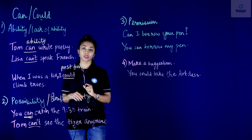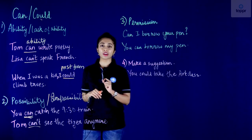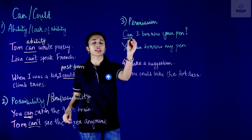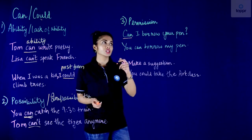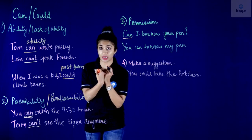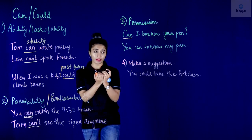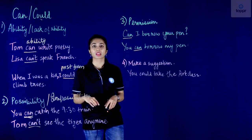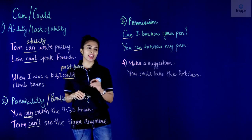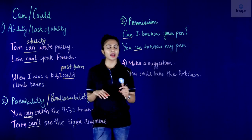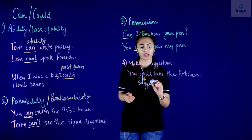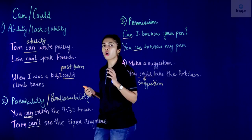The third function of can and could is asking or giving permission. 'Can I borrow your pen?' — here 'can' is used to ask for permission. And 'You can borrow my pen' — here 'can' is used to give permission. The fourth function is to make a suggestion. 'You could take the art class' — here 'could' is used to give a suggestion, advice to someone.